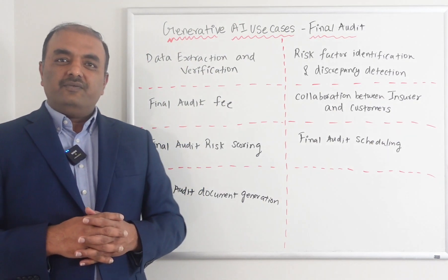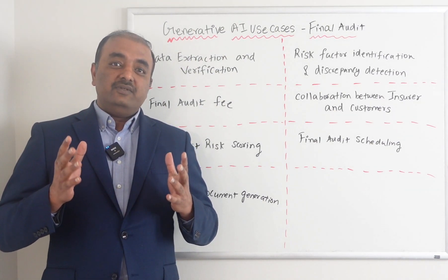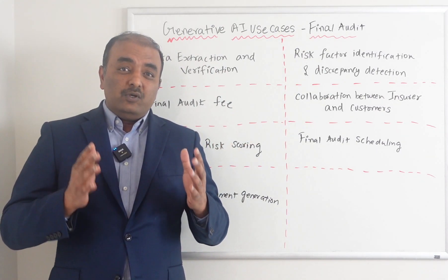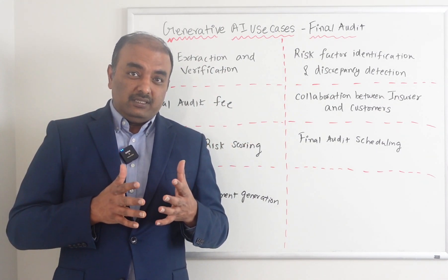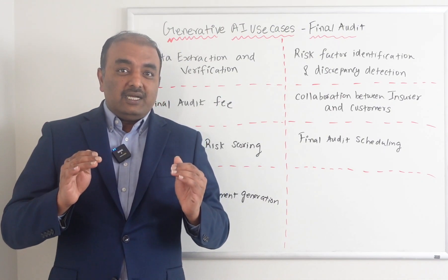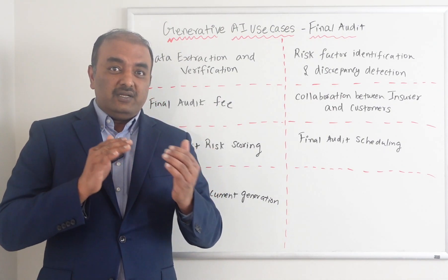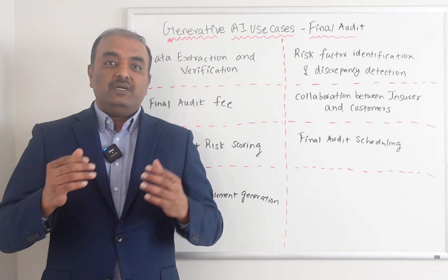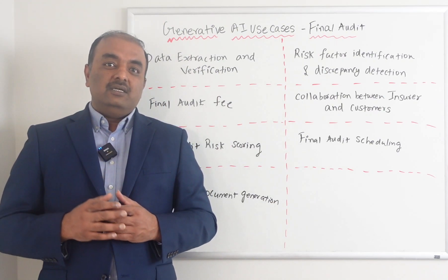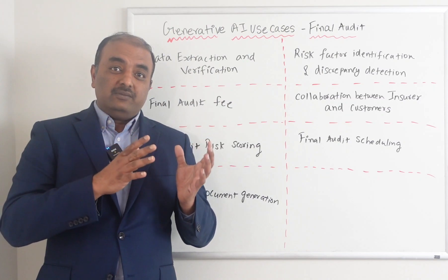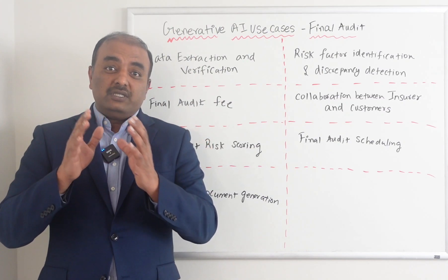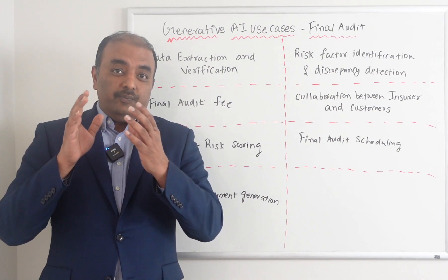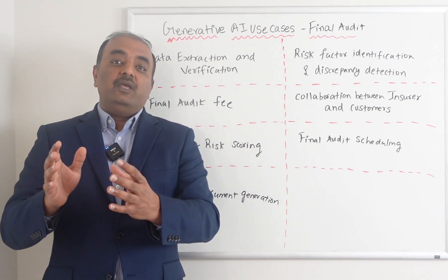Scheduling is another important use case. A main issue with audits is scheduling them on time. With AI having unique data about each customer, we can schedule audits so it is easy for the customer to pay on time and easy for the insurance company to get the actual data on time. Because it has correct data about the customer, it knows when to schedule and when to send the invoice so the customer pays the premium on time.